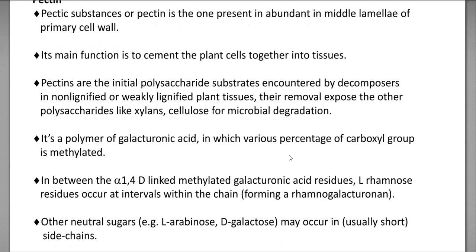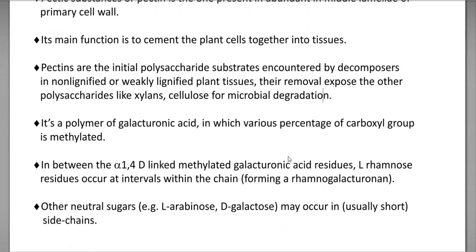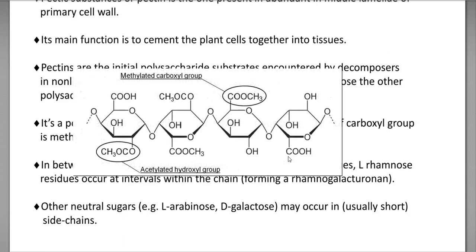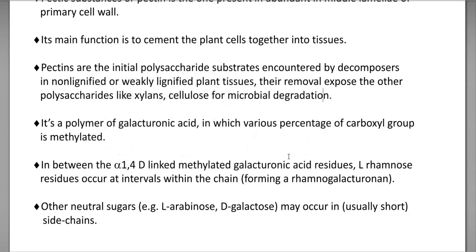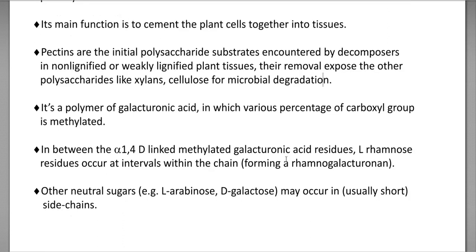Pectin is a polymer made up of galacturonic acid residues, in which various percentages of the carboxyl groups could be methylated. In between the alpha-1,4-D linked methylated galacturonic acid residues, other sugars such as rhamnose can also occur at intervals within the chain. Other neutral sugars found in the pectin chain include arabinose and galactose.